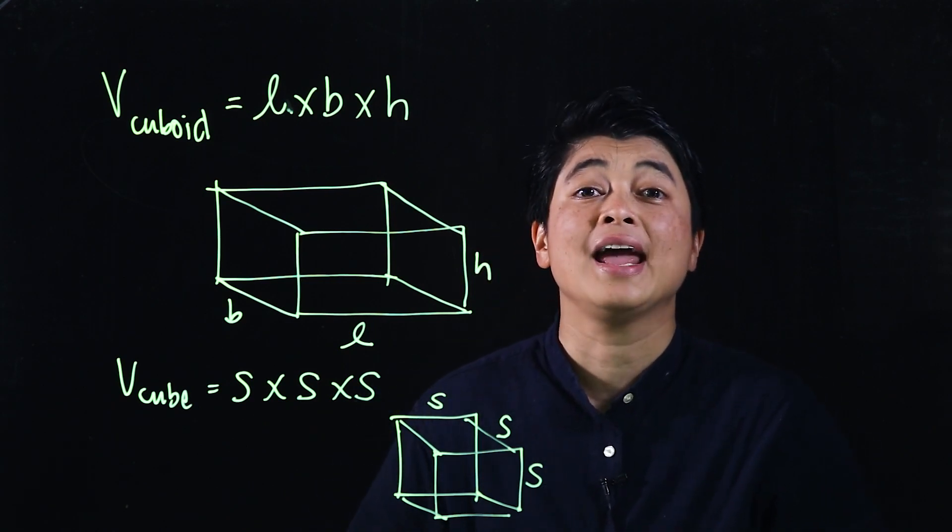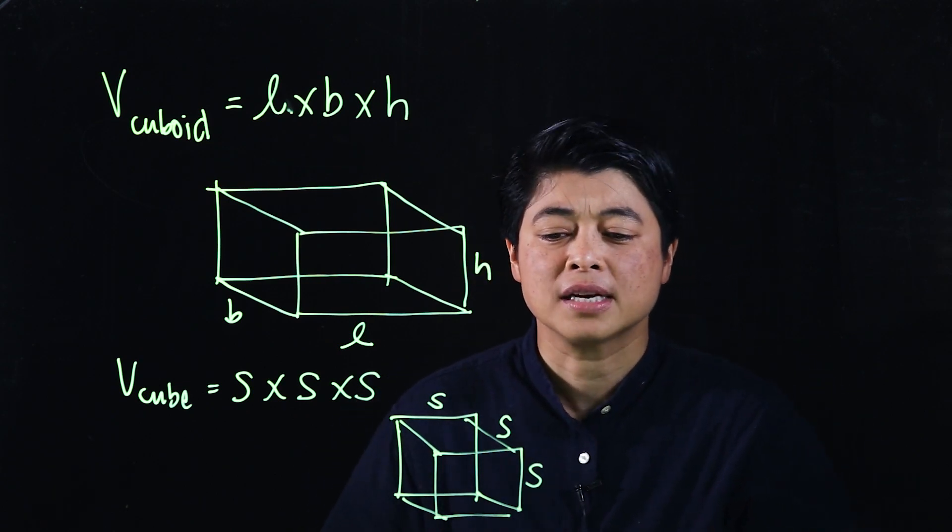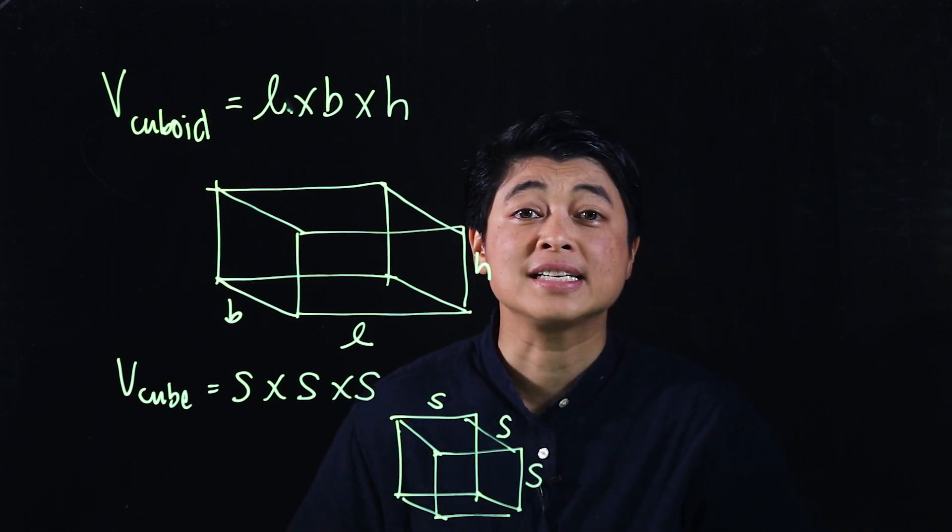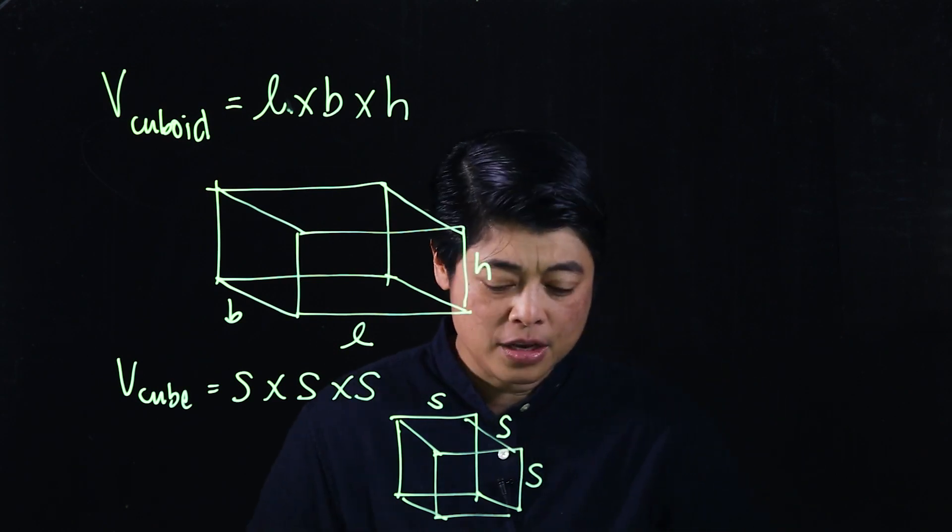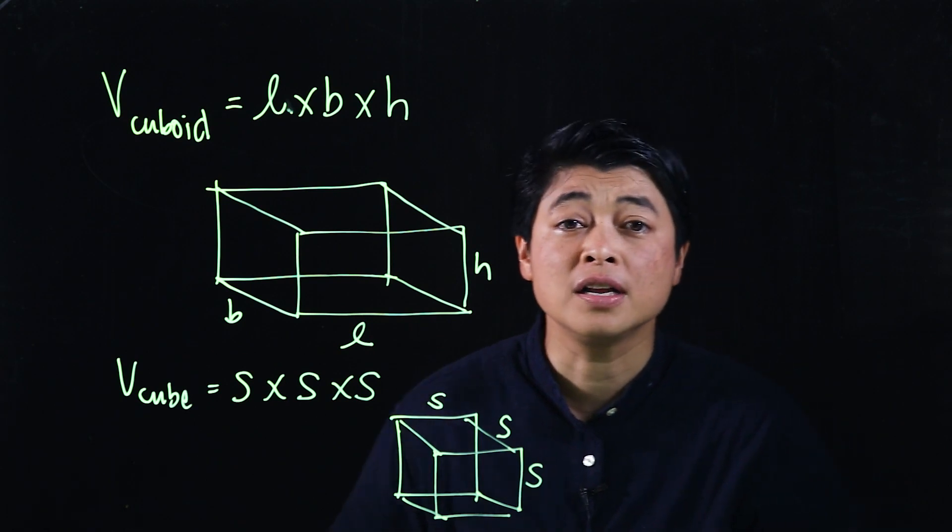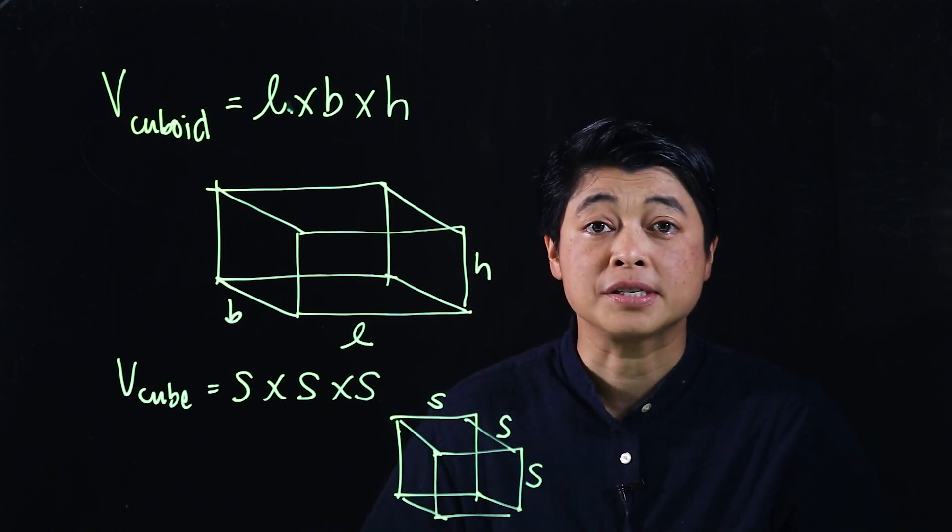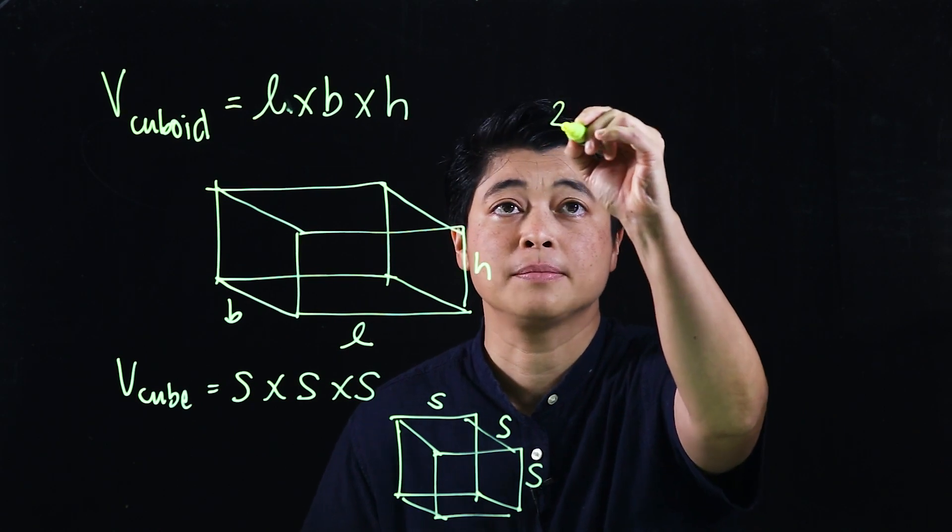The problem that I will be discussing is on page 163. So on page 163, it says find the volume of a cube of edge 11 meters. This is number two.